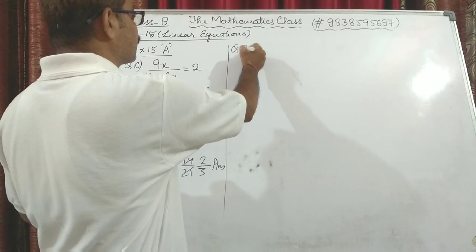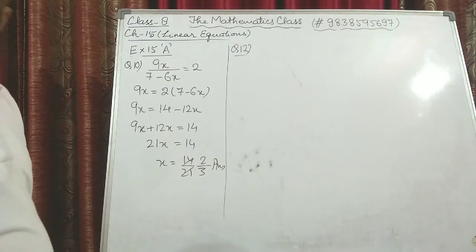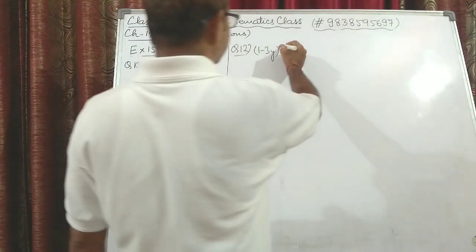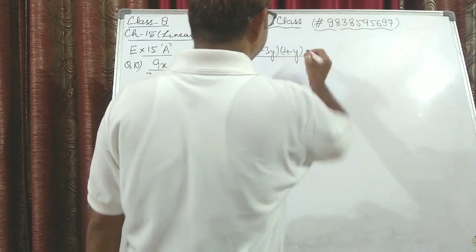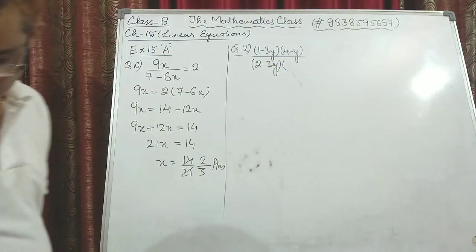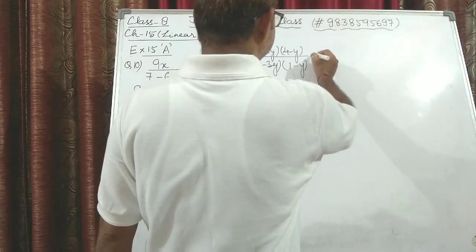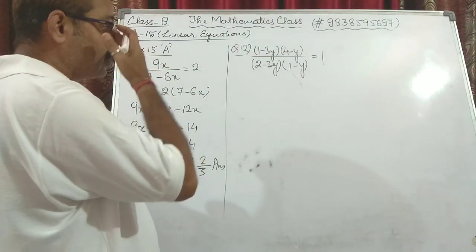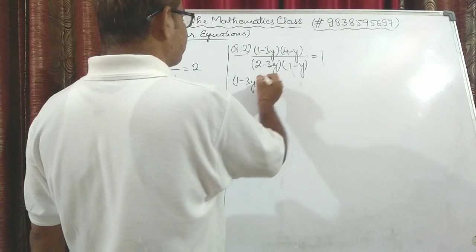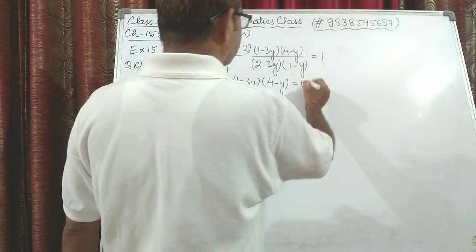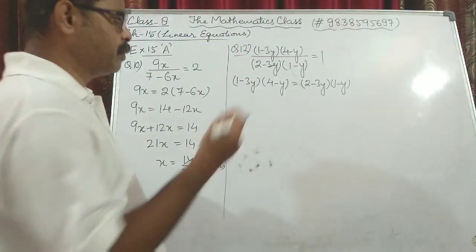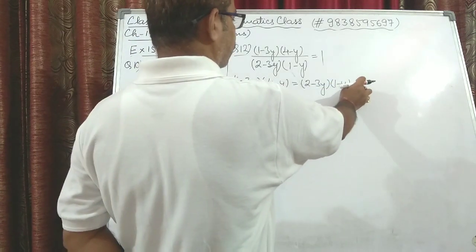Now question number 12: (1 − 3y)(4 − y) / (2 − 3y)(1 − y) = 1. We cross multiply, bringing the denominator to the other side: (1 − 3y)(4 − y) = (2 − 3y)(1 − y). Multiplying by 1 leaves the right side unchanged, so we can write it as (1 − 3y)(4 − y) = (2 − 3y)(1 − y).